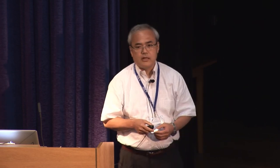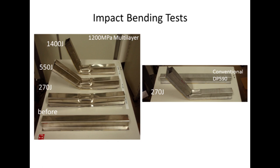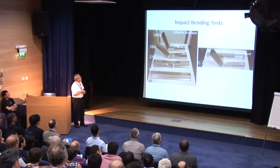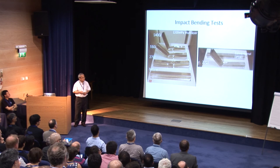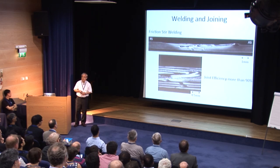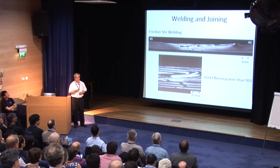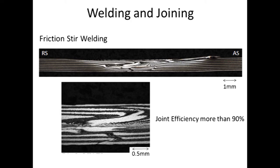Here is another high strain rate test — an impact bending test simulating pillars of automobiles. The bending strength is significantly increased in multi-layer steel compared to DP590. For the application of multi-layer steel, welding is needed, so we are trying to weld multi-layer steels using friction stir welding. The welding is successful with a joint efficiency of more than 90%, and interestingly, the layer structure remains not only in the heat-affected zone but also in the stirred zone.